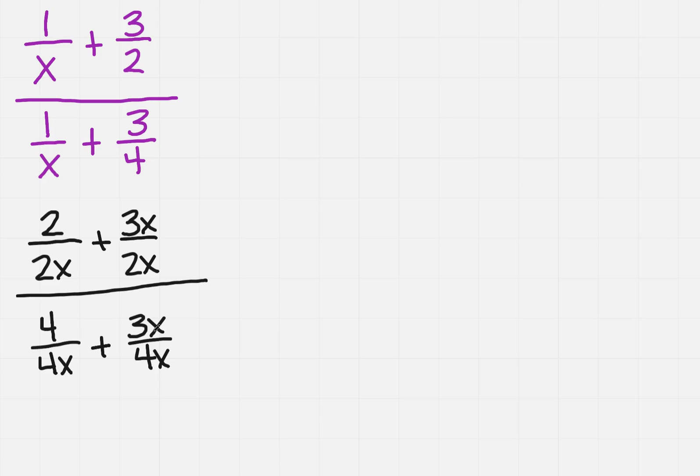So I want to simplify the numerator and then simplify the denominator. So now the 2 and the 3x do not look the same, so that's going to be 2 plus 3x over 2x. The whole thing is going to be over 4 plus 3x over 4x.